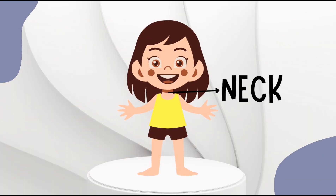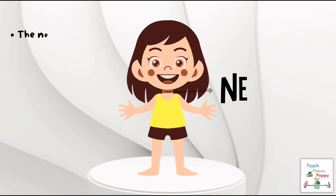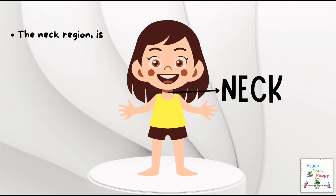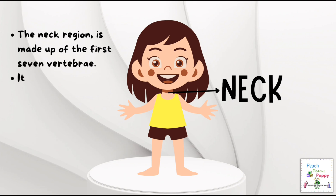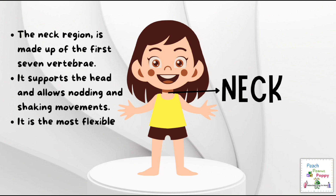Neck. The neck region is made up of the first seven vertebrae. It supports the head and allows nodding and shaking movements. It is also the most flexible part of the spine.